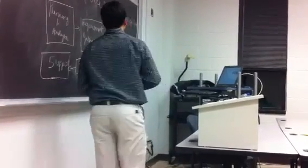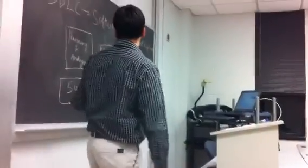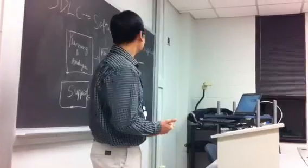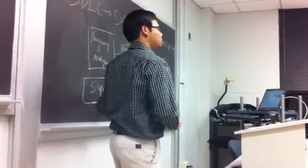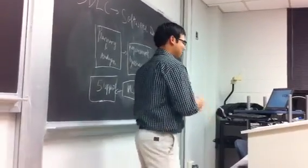These are the six phases of Software Development Life Cycle. The first is Planning and Analysis. The second is Requirement Gathering, Design, Development, Validation, and Support.